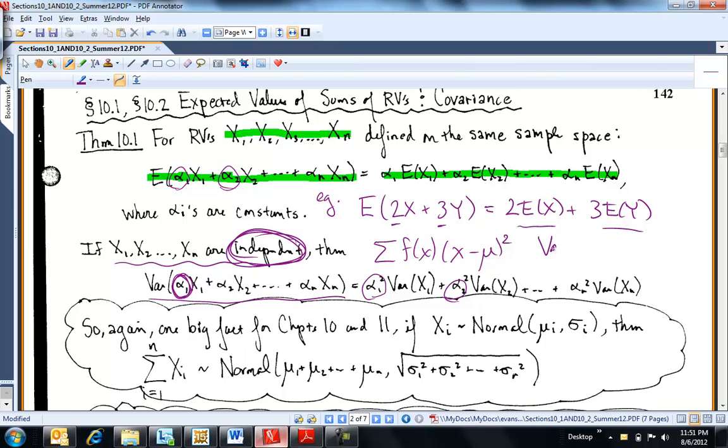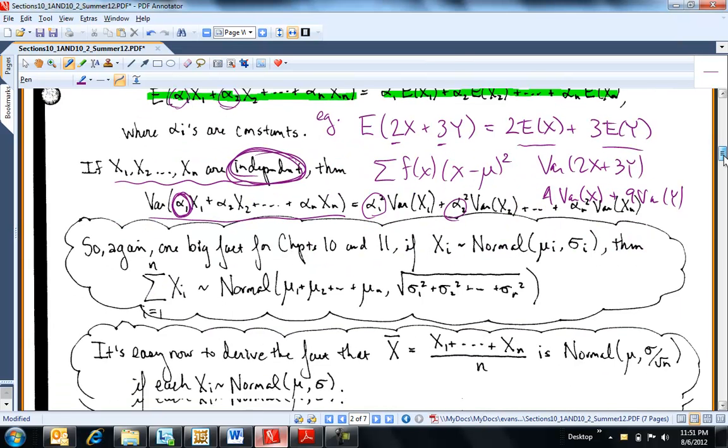So, let's look at the variance of 2x plus 3y. That would be 4 times the variance of x plus 9 times the variance of y. Okay, so that's just another example.